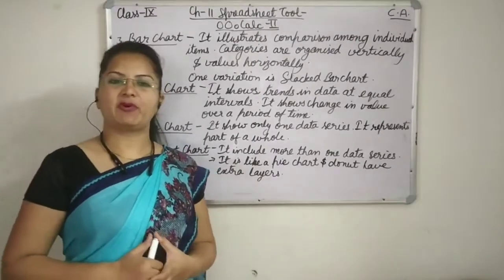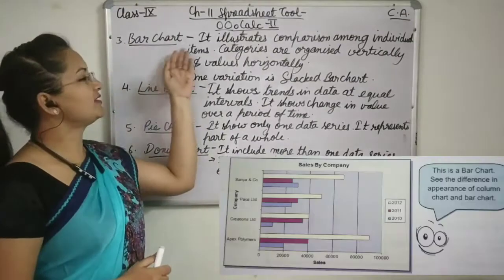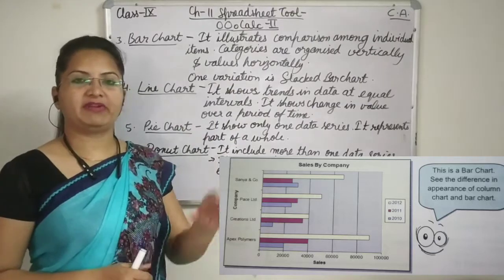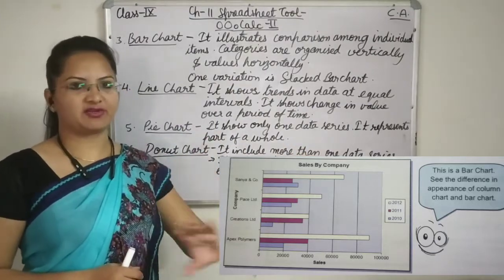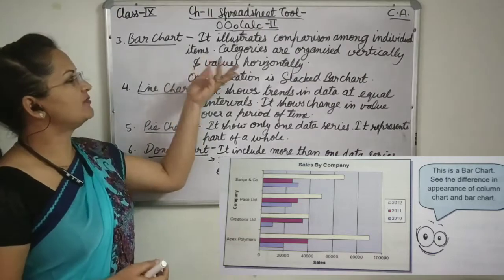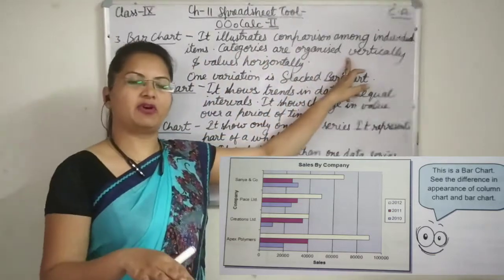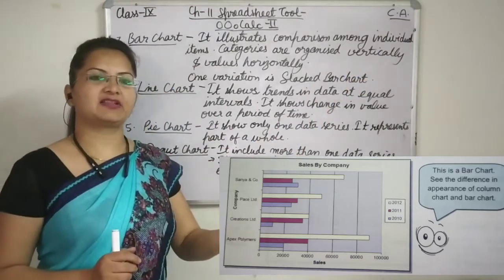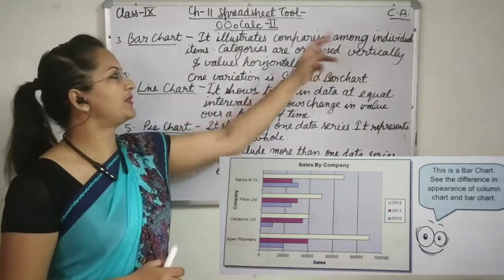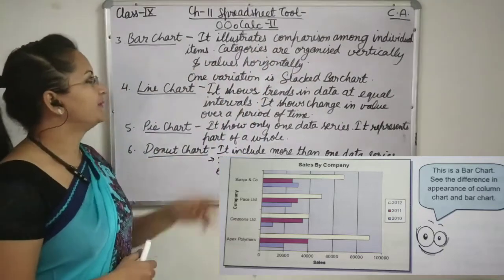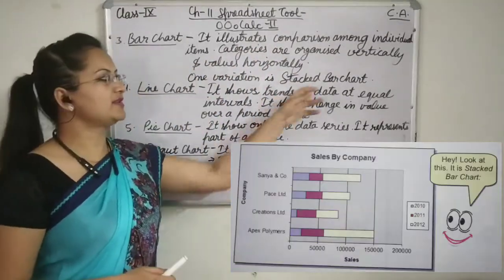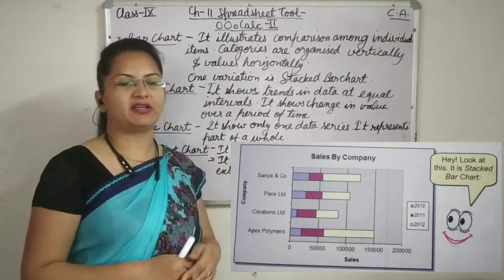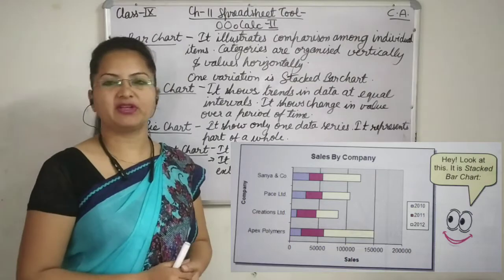Now students will study about bar chart. Bar chart is the same as column chart but here in place of vertical columns we have horizontal columns. Categories are organized vertically and values are organized horizontally. That is why it is the inverse of column chart. It is used to compare among individual items. One variation of it is stacked bar chart in which the bars are stacked one above the other instead of having separate bars for every data item.